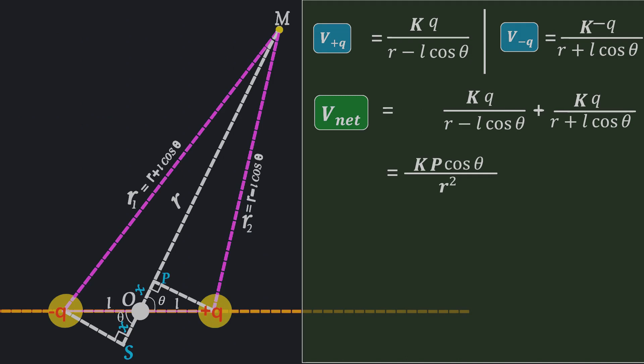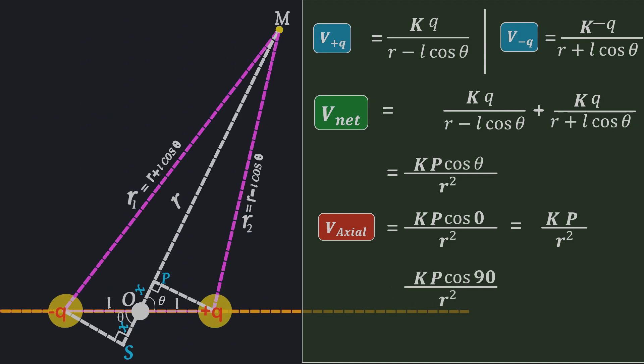In this general equation, if we set theta equal to 0 degrees, cos theta becomes 1, which gives us the electric potential at the axial position: Kp by R squared, which we calculated earlier. Similarly, when theta is 90 degrees, cos theta becomes 0, resulting in 0 electric potential at the equatorial position. In this way, using the general formula, we can calculate the electric potential at any angle and distance R.